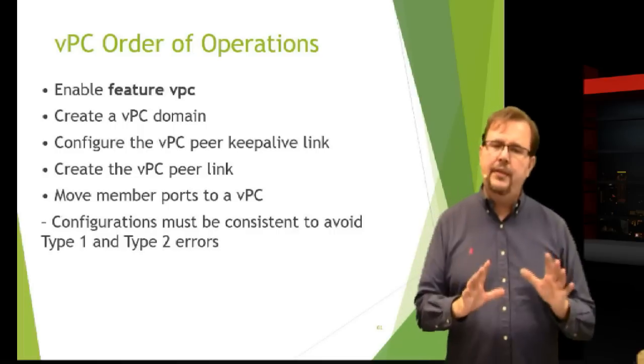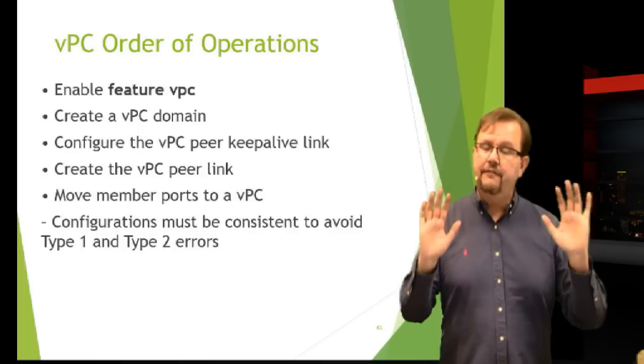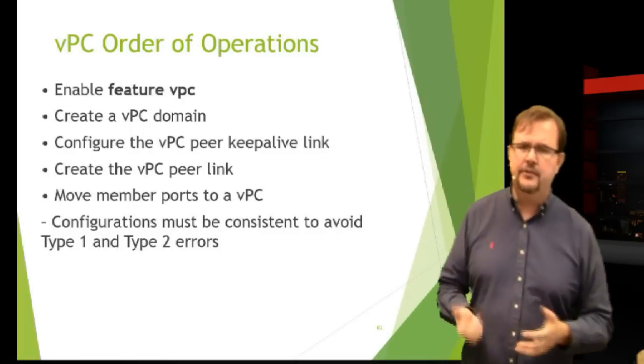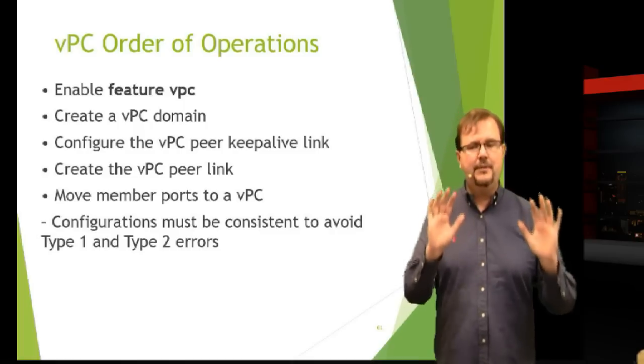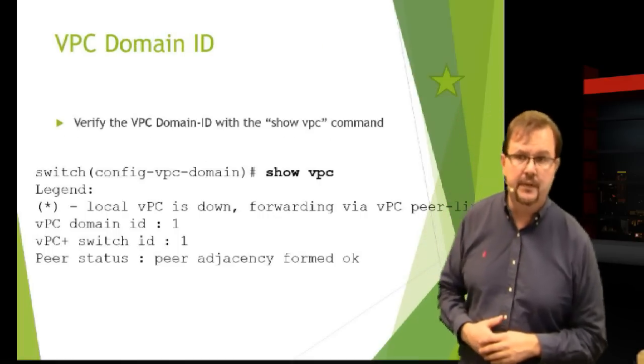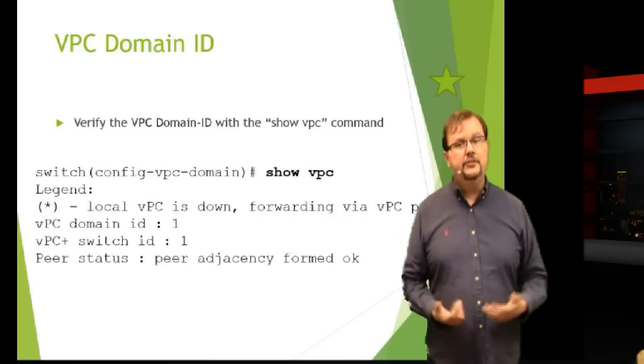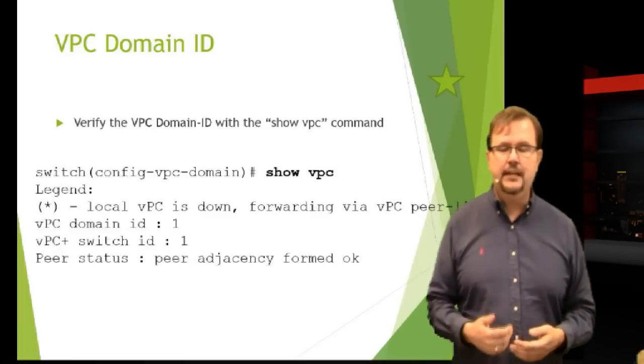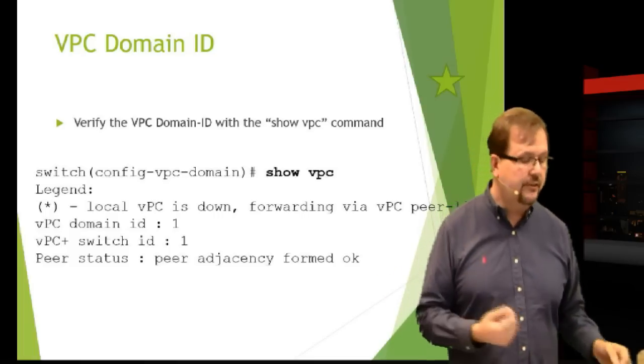One of the things that has to happen is that we have to have some type of configuration that's consistent between the two peers. There are some advanced ways we can do that, a little beyond the scope for CCNA DC, but just be aware the configuration has to be very similar between the two. I mentioned this VPC domain ID that uniquely identifies it. This is one of the things that you can verify. The show VPC command will let you see your domain ID. So we need to know the show VPC command.